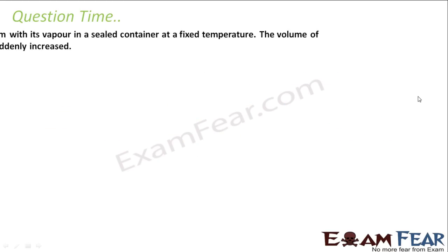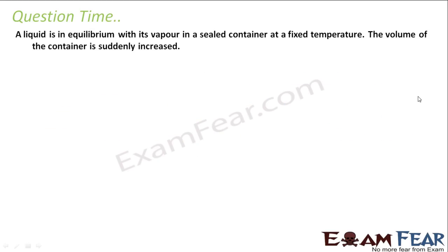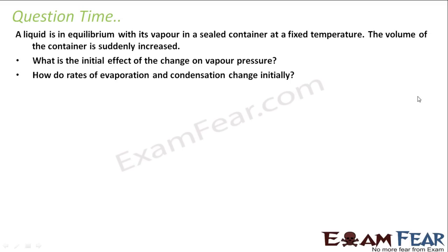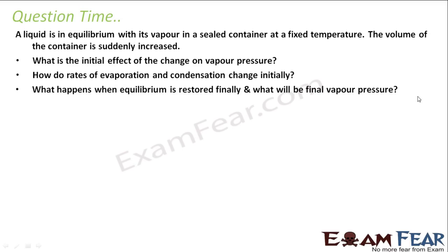Let's take one example. A liquid is in equilibrium with its vapor in a sealed container at fixed temperature. The volume is suddenly increased. What is the initial effect on the vapor pressure? How does the rate of evaporation and condensation change initially? And what will happen when the equilibrium is finally restored?